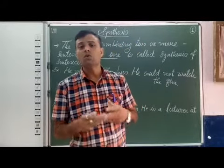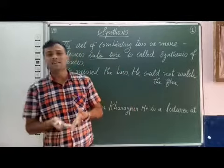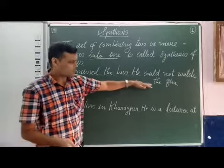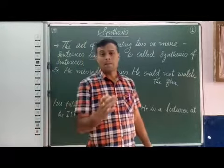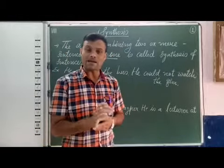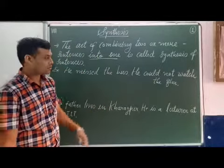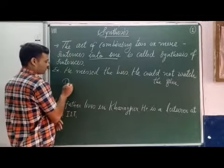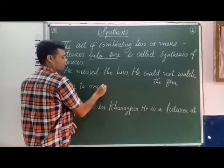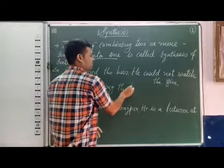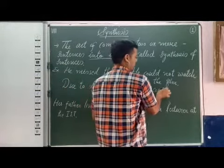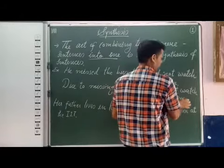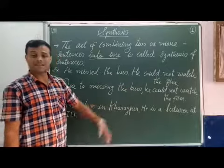But we have to combine two sentences without using a conjunction. How is it possible? 'He missed the bus. He could not watch the film.' We can use a present participle to join these two simple sentences. Due to missing the bus, he could not watch the film. We have joined these two sentences without using a conjunction.